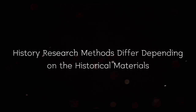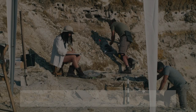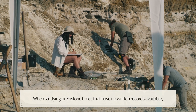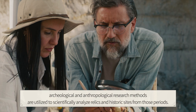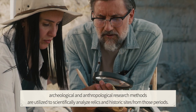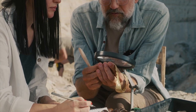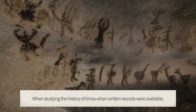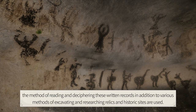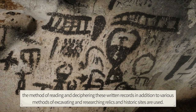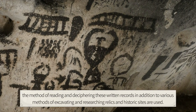History research methods differ depending on the historical materials. When studying prehistoric times that have no written records, archaeological and anthropological research methods are utilized to scientifically analyze relics and historic sites. When studying times when written records were available, the method of reading and deciphering these records, in addition to excavating and researching relics and historic sites, is used.